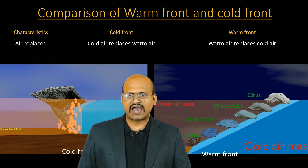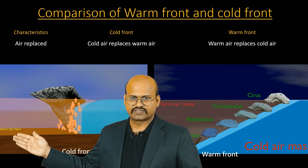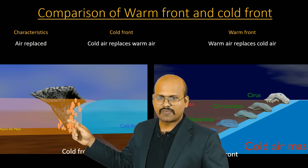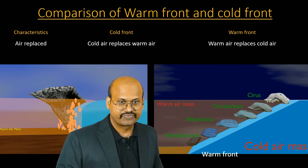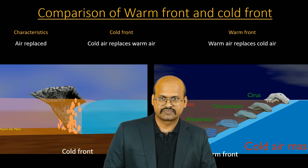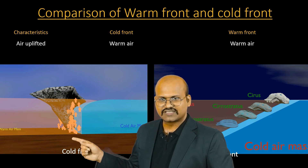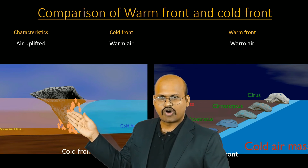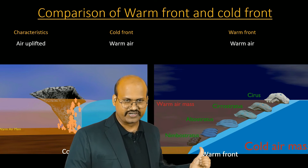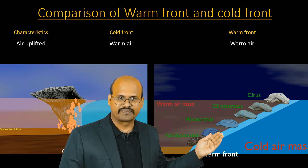At the cold front, the cold air mass replaces the warm air mass — wherever there was warm air mass it is replaced by cold air mass. At the warm front, the warm air mass replaces the cold air mass. Regarding air uplifted: at the cold front, the warm air is uplifted because warm air is lighter than cold air. Even at the warm front, the warm air is uplifted because again warm air is lighter compared to cold air.